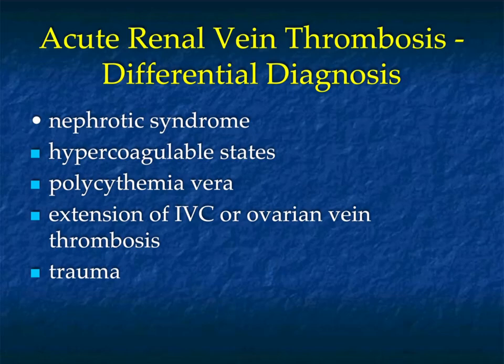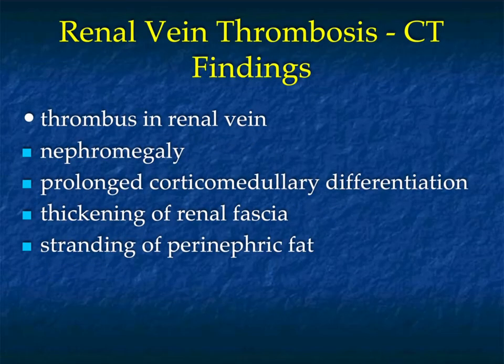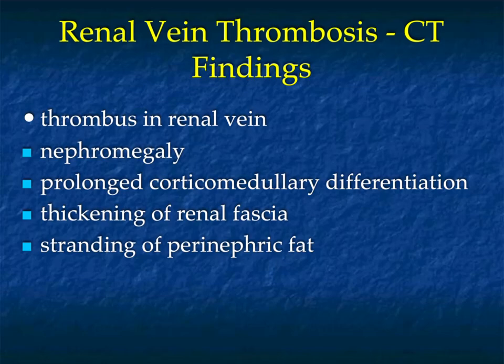Another entity that causes perfusion change relates to the vascular supply, specifically the renal vein. This could be from nephrotic syndrome to hypercoagulability states, to polycythemia vera, to tumor extension in the IVC — particularly renal cell carcinoma — and to trauma as well. When you look at the renal vein, you're looking for size and for the presence of thrombus. Patients with acute thrombus often have a large kidney. You may see difference in the corticomedullary differentiation. Early on, if the kidney is poorly functioning, you may not see that corticomedullary interface. You may also see thickening of the renal fascia and stranding in the perinephric space.